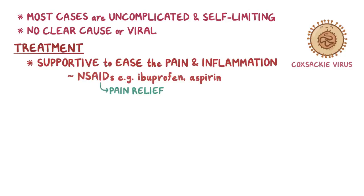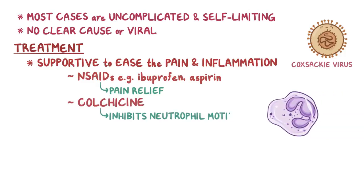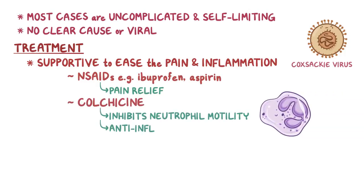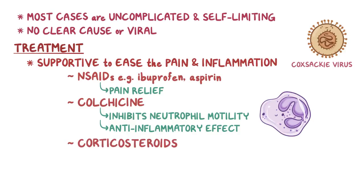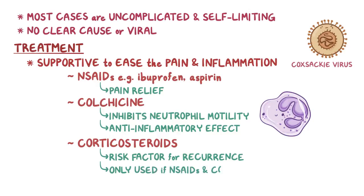If NSAIDs aren't enough, they can be combined with colchicine, which inhibits neutrophil motility and has an anti-inflammatory effect. In some cases of acute pericarditis, corticosteroids may be used to calm the inflammation, but the use of corticosteroids is a risk factor for recurrence, so they should only be used if NSAIDs and colchicine aren't sufficient.